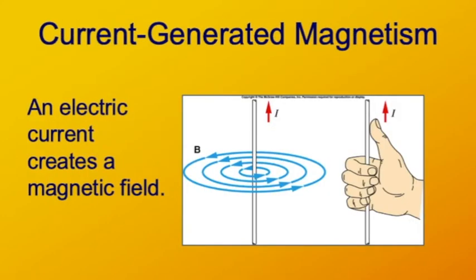Let's look at the prototype current system: a straight wire carrying current. A straight wire of current creates a magnetic field that loops around the wire in a circular fashion, following its own right-hand rule. If you extend the thumb of your right hand in the direction of the current, the magnetic field around the wire is in the direction your fingers naturally curl. This field is unlike dipole fields from magnets — it has no north or south pole; the field lines just cycle around.